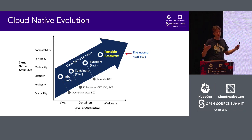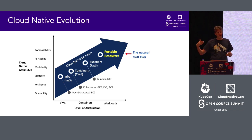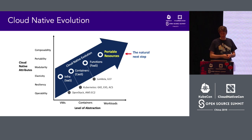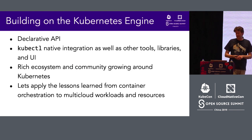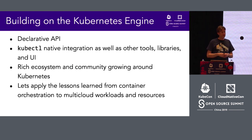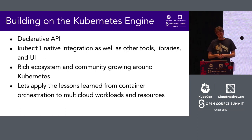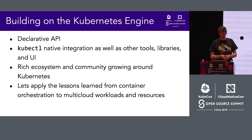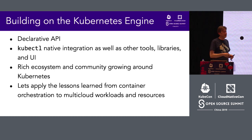In a workload-centric model, those portable resources can span things we're writing and applications that we have dependencies on. Building on the Kubernetes engine brings lots of advantages: a declarative API, kubectl for native integration with other tools, libraries, and UI, a rich ecosystem and community, and the ability to apply lessons learned from container orchestration to multi-cloud workloads and resources.